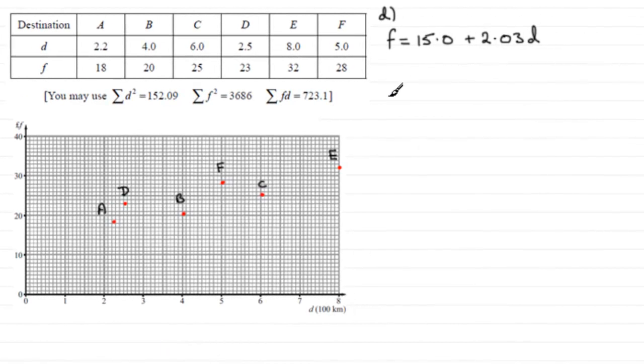Now in part E, we've got to state the meaning of the value B in our equation for the regression line. The B was the value 2.03. Let's just mark it down here. B equals 2.03.